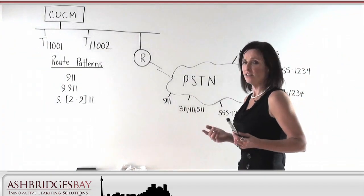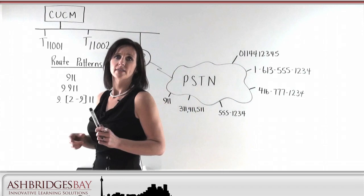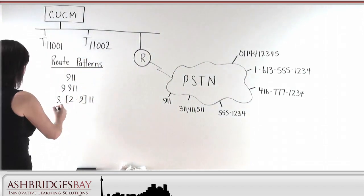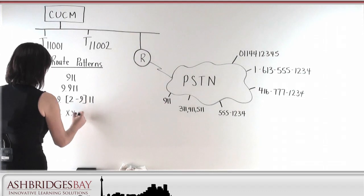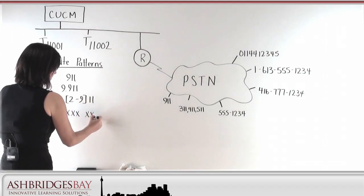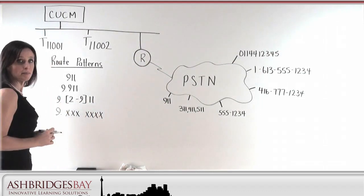Let's carry on with our dialing. Let's look at putting in a seven-digit pattern. I'm going to put in my access code for an external number and seven X's. Let's see if that's going to cause us any problems.